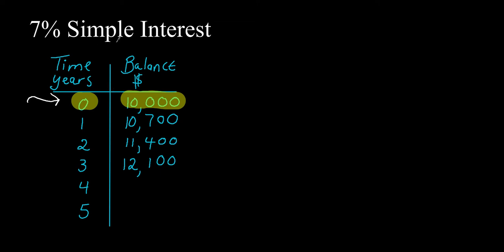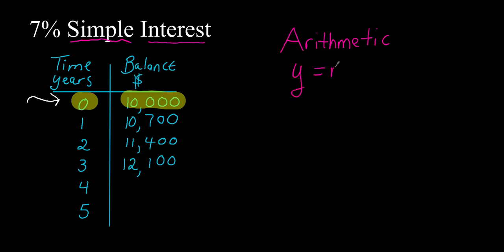Simple interest implies arithmetic growth — and maybe you've studied arithmetic sequences, but I'll go over it if you haven't. The equation that relates to arithmetic growth is y equals mx plus b. Arithmetic means that you're adding the same amount each year to get to the next year's balance.